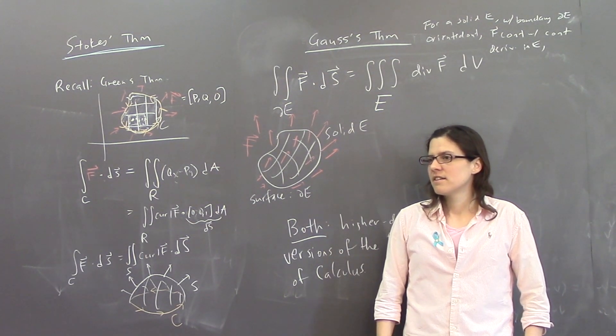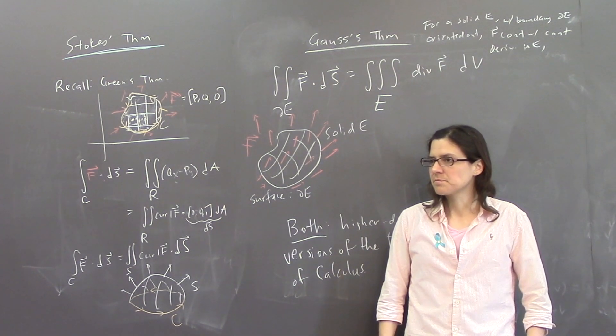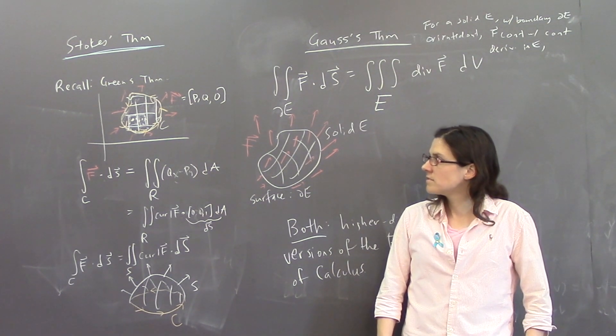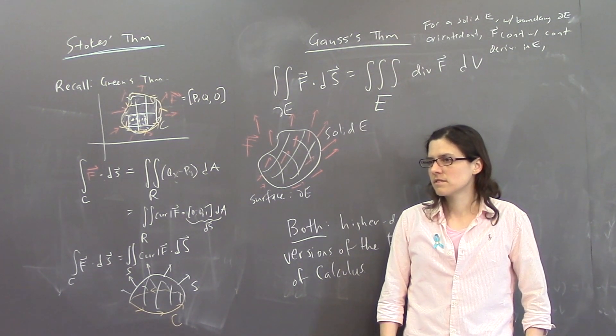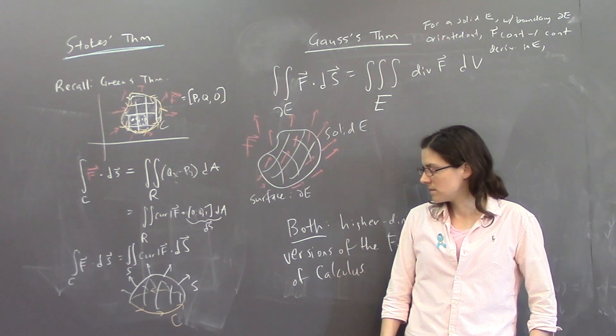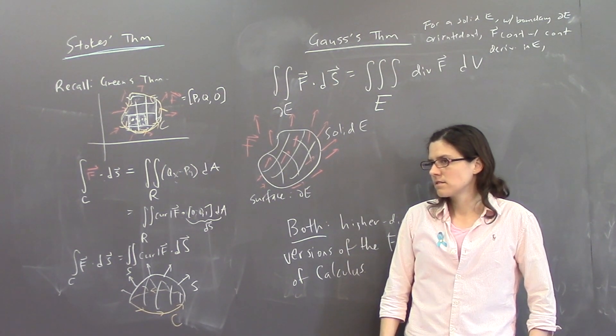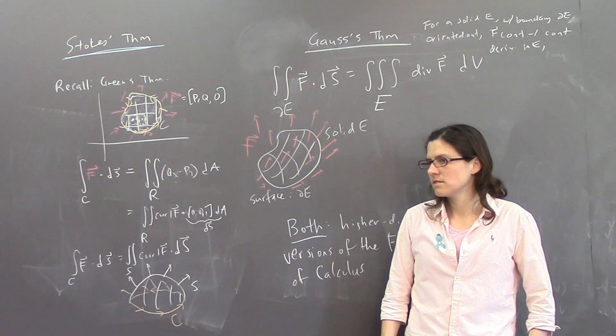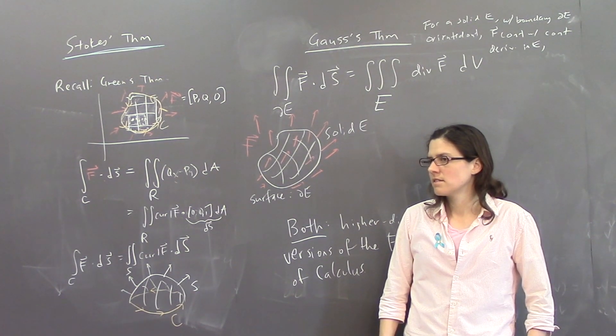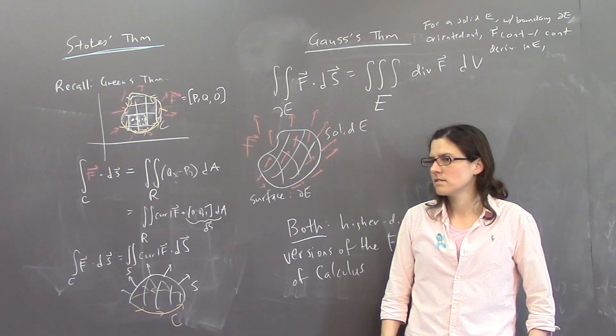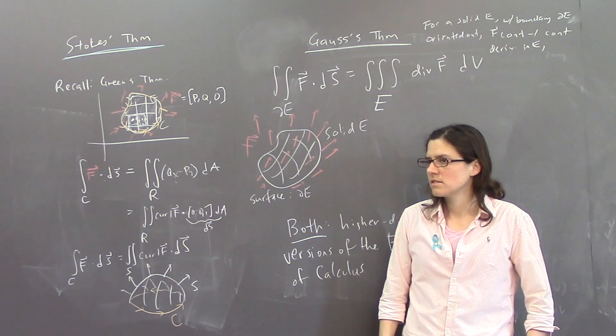So if our explanation of Green's theorem is that you're sort of summing the curl over the area and then for Stokes' theorem over the surface or whatever, where does the, like, dotting it with the normal vector come into play here? Like, why do we do that when we're just trying to sum it over the region, if that makes sense?